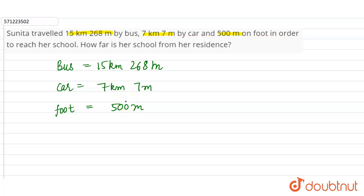To find the total distance from her home to her school, we have to find the total distance covered by bus, plus car, and foot. We can observe that there are two units in the same term.